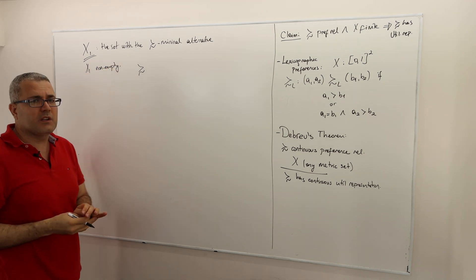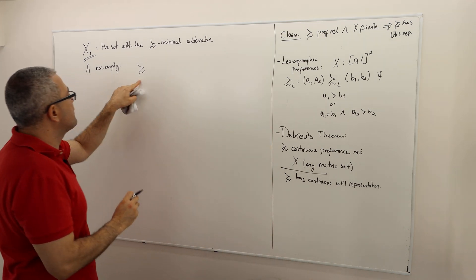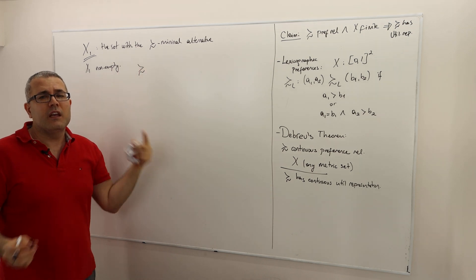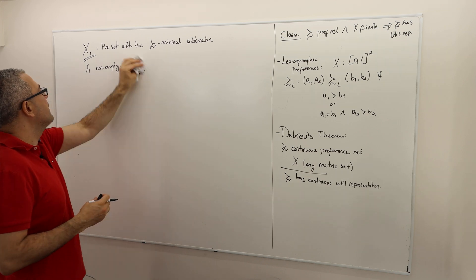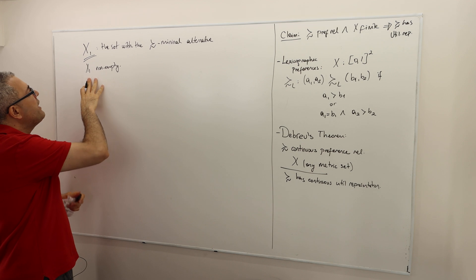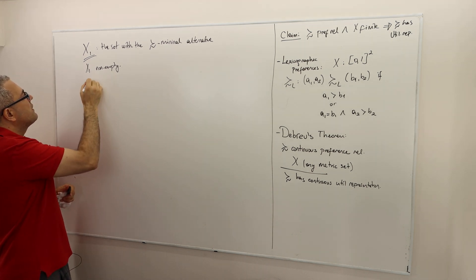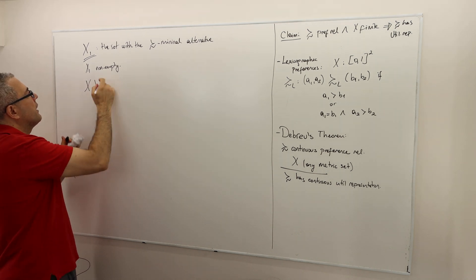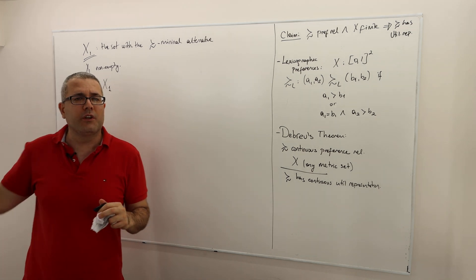I know that x1 is non-empty. How do I know that? We argued previously that every preference relation is going to have the worst and the best alternative if the set of alternatives is finite. Now consider the set x minus x1, meaning exclude those worst alternatives.